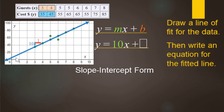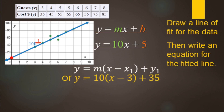For the y-intercept, it ends up being 5. But since you can't always read it precisely from the graph, use point slope form to be accurate. The slope m is 10, and using the point (3, 35): y − 35 = 10(x − 3). That's your point slope form equation.